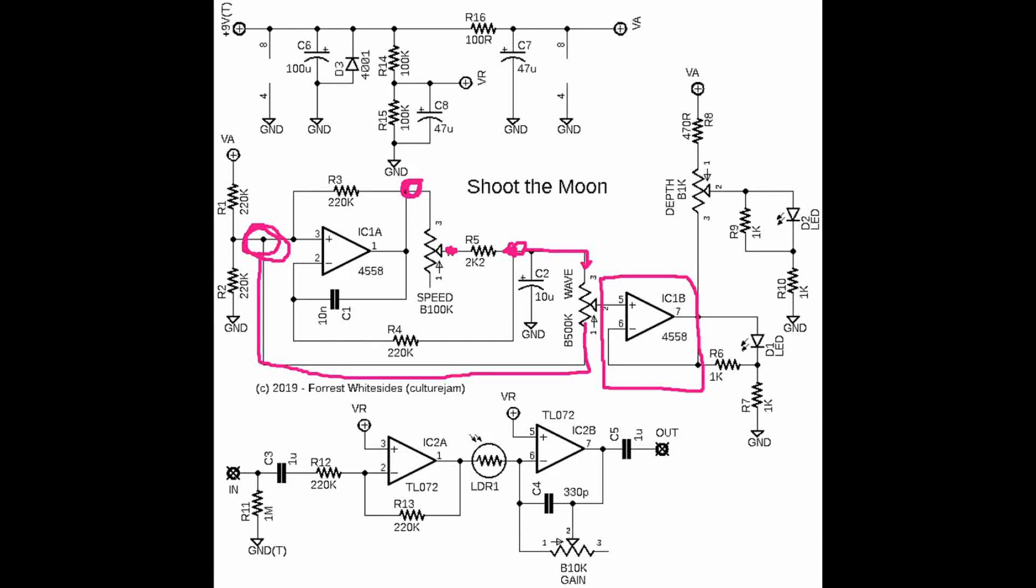So this LFO has some fun tricks in that we can not only adjust the speed but also the shape of the LFO. So you can get the square wave will give you the really percussive choppy tremolo, and the triangle will give you a little smoother of a tremolo sound.